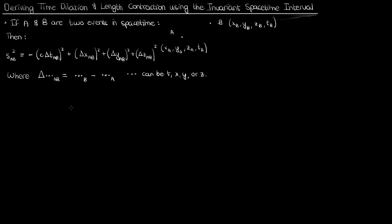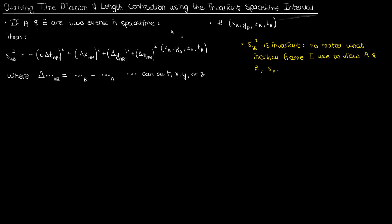This s squared between A and B is called the spacetime interval between A and B — the separation or distance between A and B in four-dimensional spacetime. When I say that the spacetime interval is invariant, I mean that no matter what inertial reference frame I use to view A and B, the s squared between A and B will be the same across all inertial reference frames. So whether I'm in a frame moving northeast, northwest, or north, s squared will be the same. This is a critical principle in special relativity in our Minkowski spacetime.